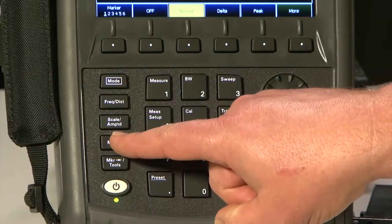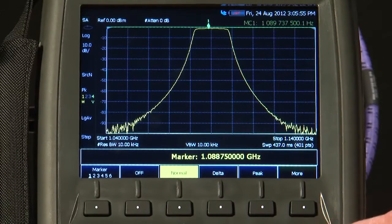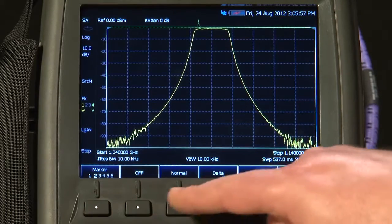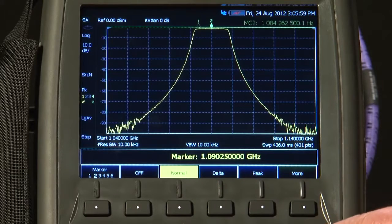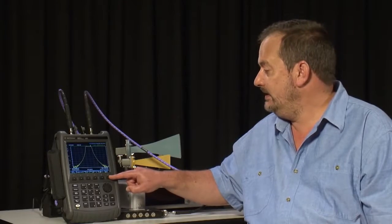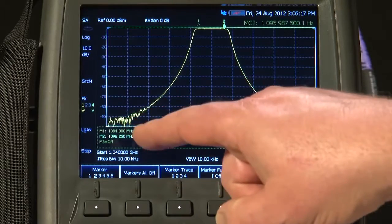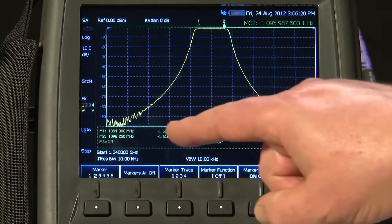As you would expect, if I press the Marker button, we have got six markers available. There is Marker 1. Let us turn on another marker. If I press More, we can display the Marker Table. This shows us the values of all six markers, their frequency, and their insertion loss.